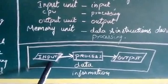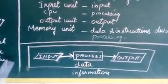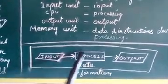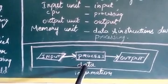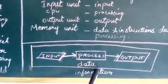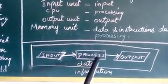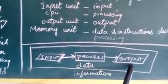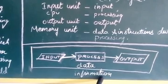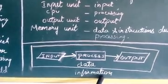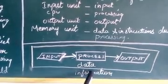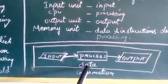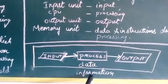Diagrammatically: we have raw data as input, we process that data, and the output is processed information. This is the relationship between data and information.